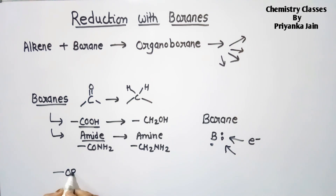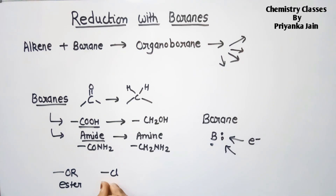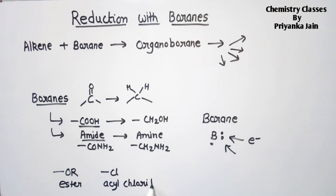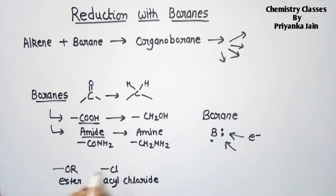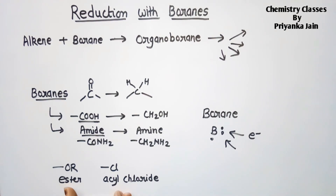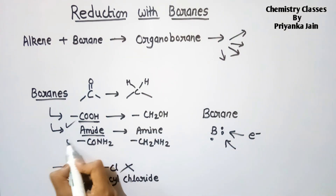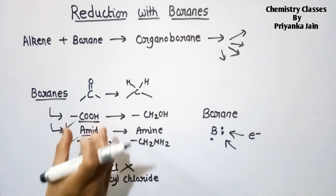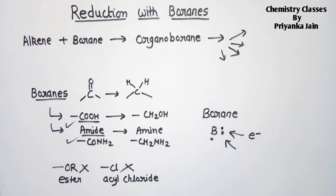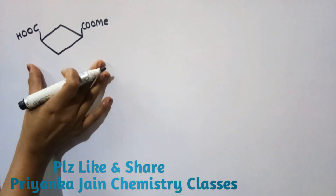Boranes will not attack electron-deficient sides. The electron-deficient sides are the OR group of the ester and the chlorine of acyl chloride. These groups are electron-withdrawing, making those sites electron-deficient. Therefore, borane will not attack these sites — only the electron-rich sites (COOH and amide) are attacked.